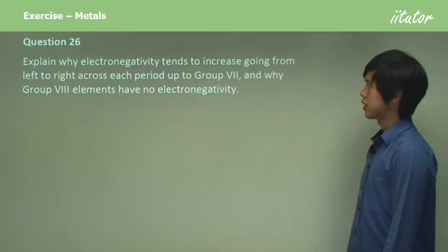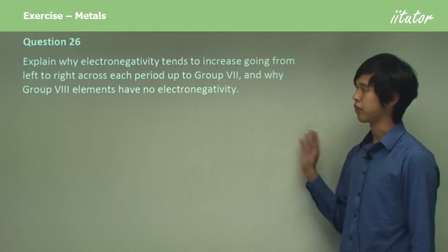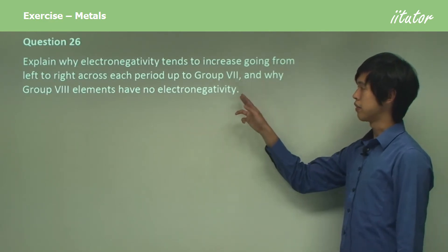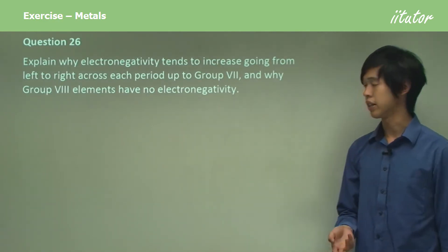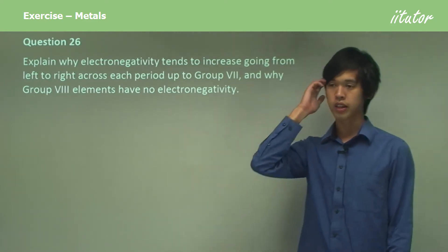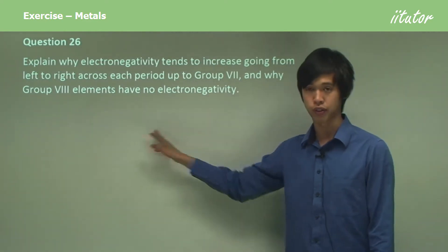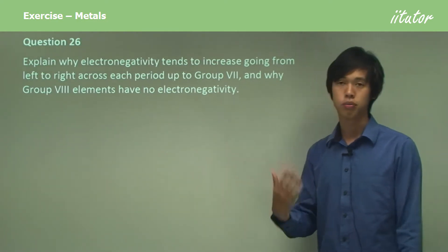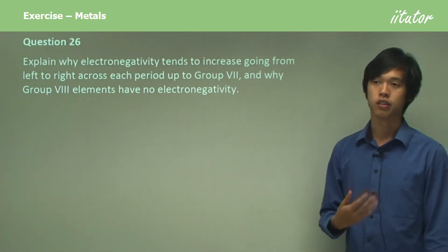Explain why electronegativity tends to increase going from left to right across each period up to Group 7, and why Group 8 elements have no electronegativity.